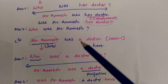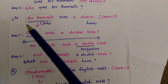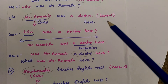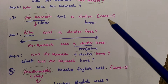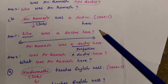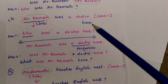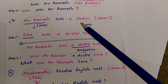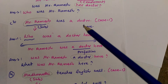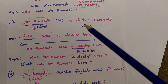In case number three, whenever we have sentences with two persons — one in the subject place and one in the complement place — we have two answers. Let us have some more practice with some examples.